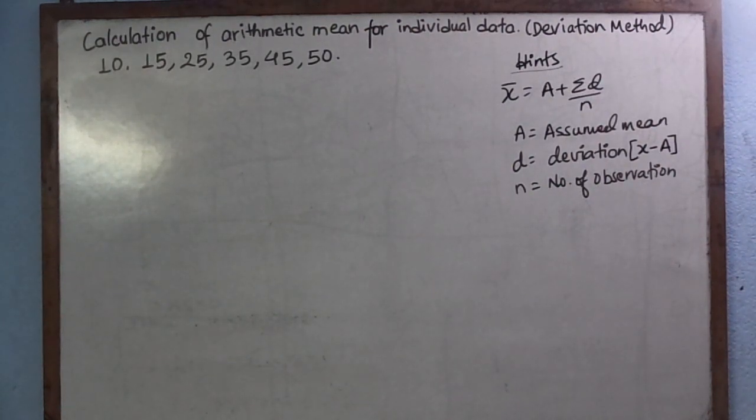At the right-hand side you can see the hints. Arithmetic mean equals to capital A plus summation D divided by n, where capital A equals to assumed mean, D equals to deviation (deviation is X minus A, means given data minus assumed mean), small n equals to number of observations. Capital N denotes sum of the frequency, which is not included over here.